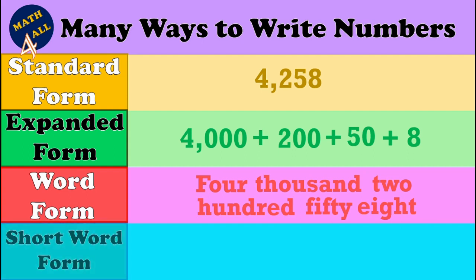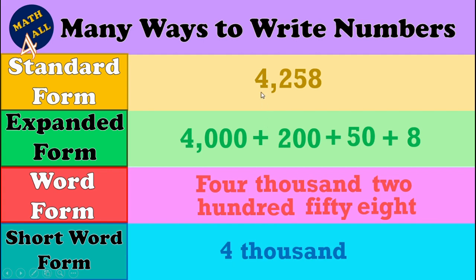The next way is the short word form. It means you write the number in digits and the name of the place value house in letters. For example, I will write four in digits and thousand in letters — like this: four thousand — then drop the rest of the number. I write just the name of the house in letters and the rest in digits.